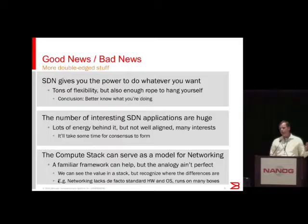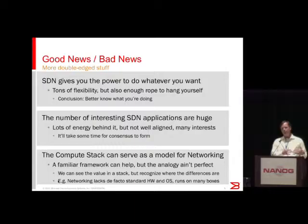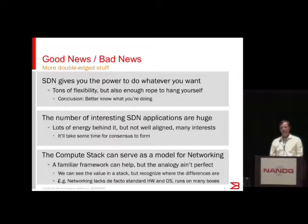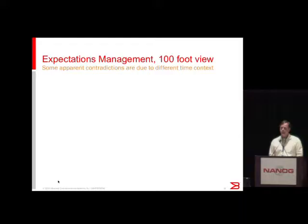People like to use the compute stack as a model — it's nicely layered with vendors competing in every aspect. Wouldn't it be nice to do that in networking? It's a familiar framework, but we're not in the same position. We don't have the equivalent of an Intel yet, and there are lots of other differences. Networking is much more widely deployed than computing was when the compute stack was developing, so we have this legacy of existing hardware that OpenFlow wants to work on, which complicates life a lot.